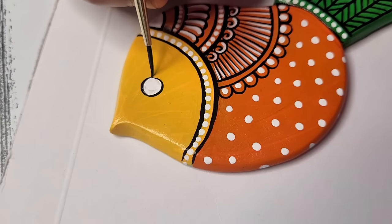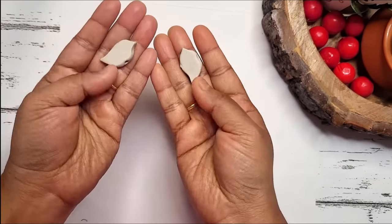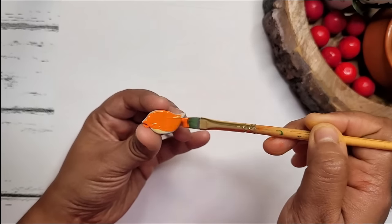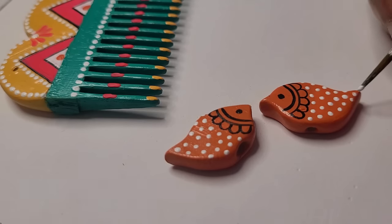And drawing the eyes using black color. Here are two small birds I made using air dry clay. I have also made one hole so that we can put it in a thread while stitching the dory part.